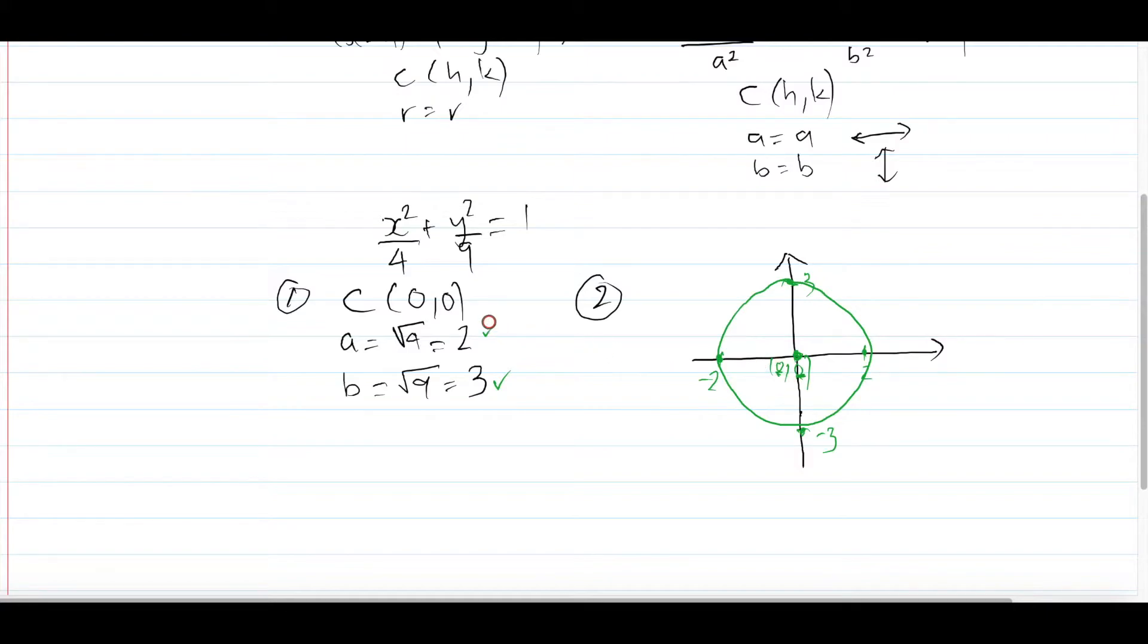Very simple. Find your center, find your a, find your b. a value is always underneath x, and you make sure to square root it. b value is always underneath y, and make sure to square root that as well, because that's a² and b². Then afterwards you can start sketching it: get your center, add the a value to the x value and then minus it as well to get the two furthest points horizontally. Then you add the b value and subtract the b value from the y value of the center, and you get these two points. Connect those four points together and you get your ellipse.